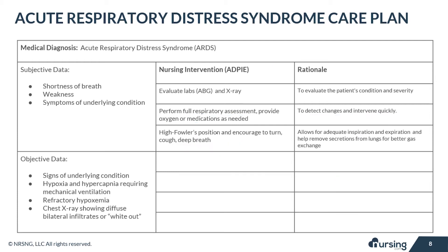If possible, place your patient in a high Fowler's position and encourage them to turn, cough, and deep breathe. This allows for adequate inspiration and expiration and helps remove secretions from the lungs for better gas exchange.